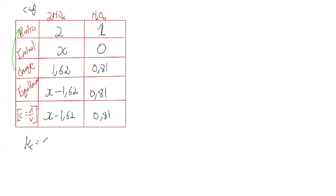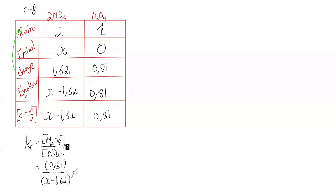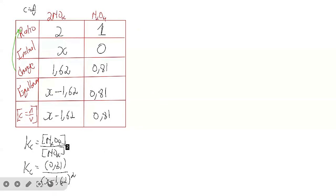So Kc = 0.81 / (x − 1.62)². Since we don't have the value for Kc, this is our Kc expression in terms of x. That is how they wanted us to express it — and that's how you show that the equilibrium constant for this reaction is given by that expression.